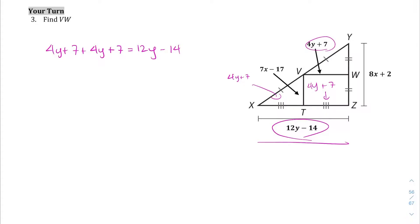That'll help us solve for VW. Let's combine like terms here. Those 4Ys are going to join together, and those 7s are going to join together, so we're going to get 8Y plus 14 equals 12Y minus 14. There's variables on both sides, so I'm going to move the smaller one here first.